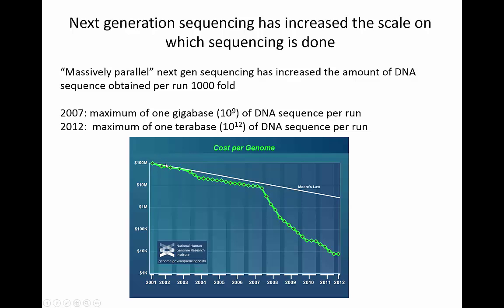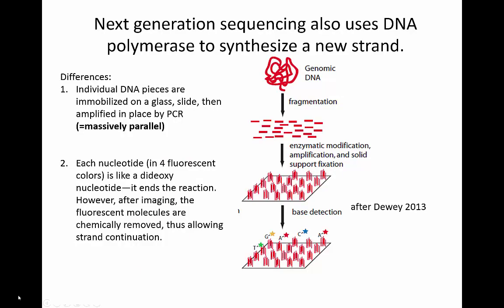Over the years, sequencing costs slowly declined, and in 2007 when next-generation sequencing was developed, the cost began to plummet. The idea in next-generation sequencing is the same general concept as dideoxy sequencing, except it has become massively parallel. Individual pieces of DNA are placed on a plate in many different locations — perhaps a million different spots — and new bases are added using DNA polymerase and fluorescent nucleotides. Several companies have developed next-generation sequencing with variations between their technologies.